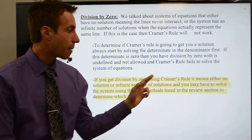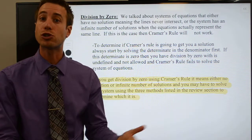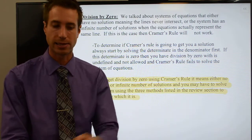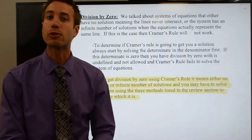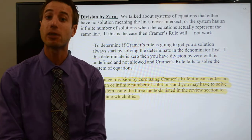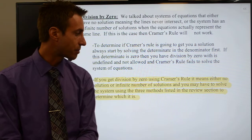Or you wind up with division by zero when there's no solution, the system is inconsistent, meaning that none of the three planes ever intersect, maybe all three planes are parallel to each other or something like that.